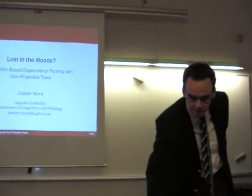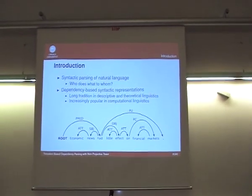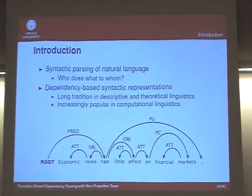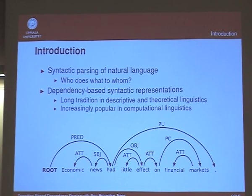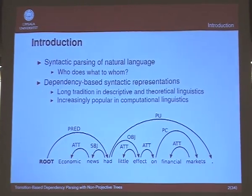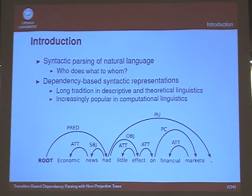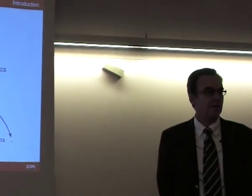I am going to talk about syntactic parsing of natural language, which is the task of trying to extract information about the syntactic structure of a natural language sentence, such that we can infer things about the predicate-argument structure — often described as figuring out who does what to whom. I have a mundane example from the Wall Street Journal: economic news had little effect on financial markets.